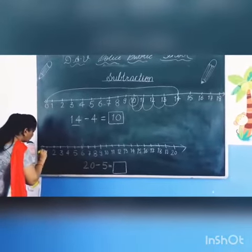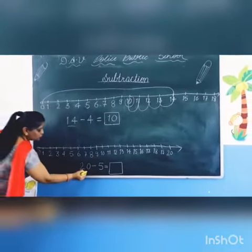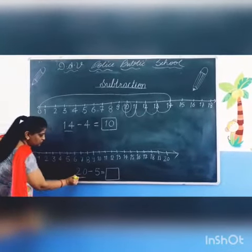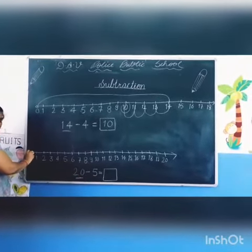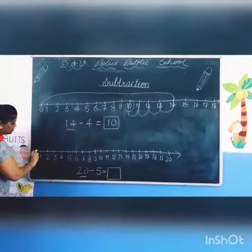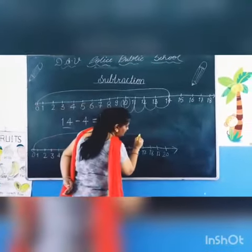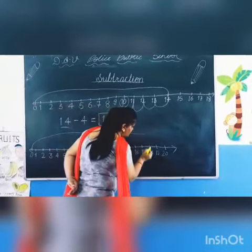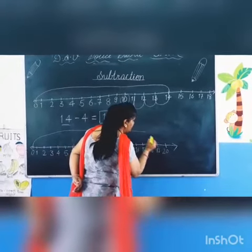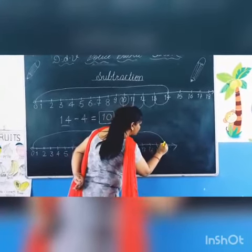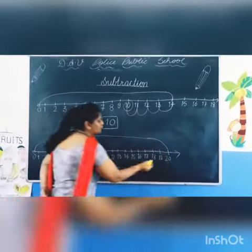Start again. This is a number line. 20. Start — where is 20? This is 20. 20, 2 0, 20.